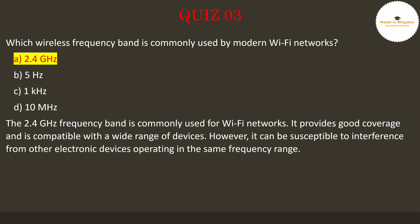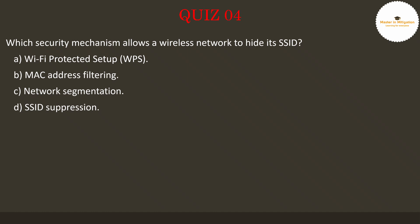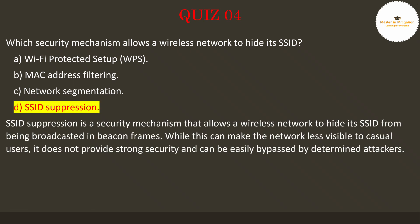Let's proceed to the next question. Question 4: Which security mechanism allows a wireless network to hide its SSID? Pause the video now to select the best answer. The answer is D: SSID suppression. SSID suppression is a security mechanism that allows a wireless network to hide its SSID from being broadcasted in beacon frames. While this can make the network less visible to casual users, it does not provide strong security and can be easily bypassed by determined attackers.